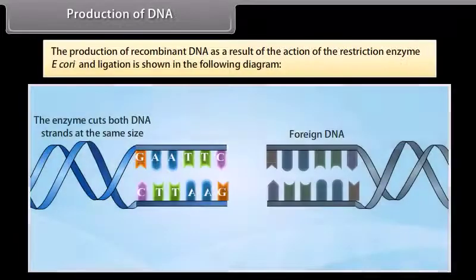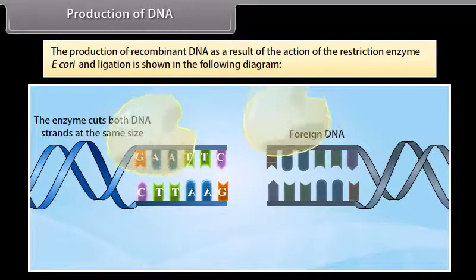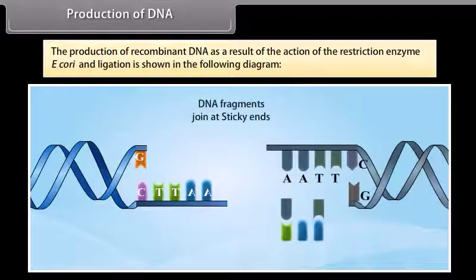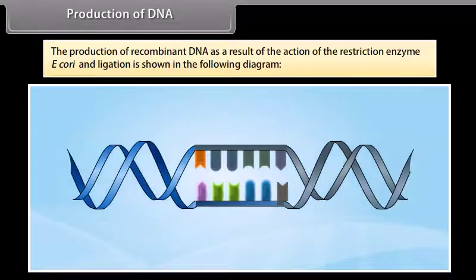Production of recombinant DNA as a result of the action of the restriction enzyme E. coli and ligation is shown in the following diagram. The enzymes cut both DNA at the same size. After that, both DNA fragment can be joined at the sticky ends and it results in a recombinant DNA.